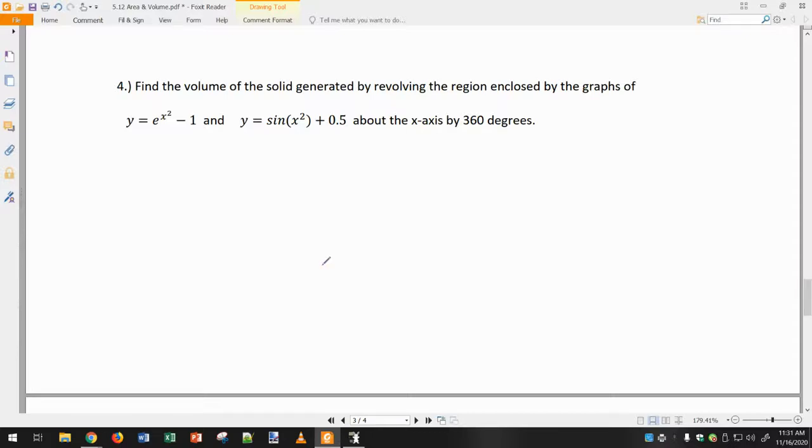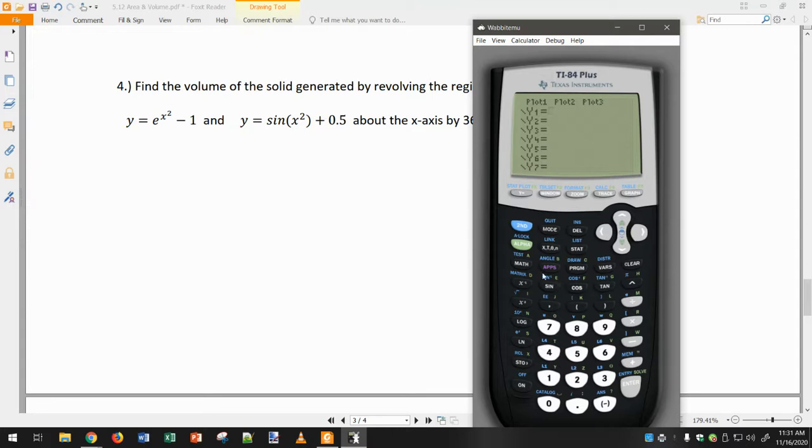Okay, I'm going to do number four first. I'm going to start by graphing these: e to the x squared minus 1 and then sine of x squared plus 0.5. So zoom six, hopefully we can see it. Remember you might have to adjust the window if you can't see the functions.